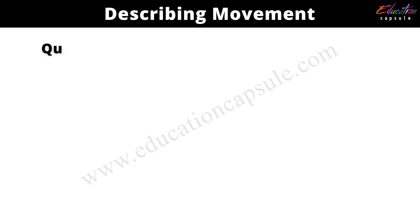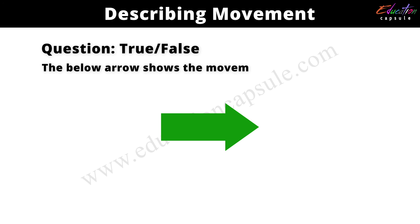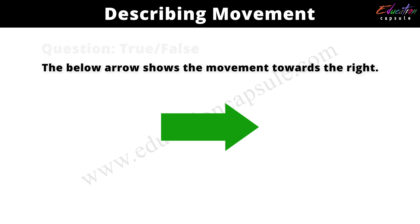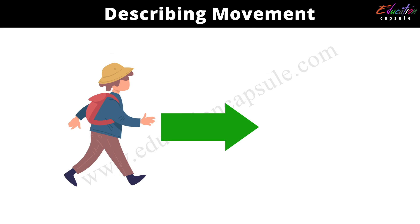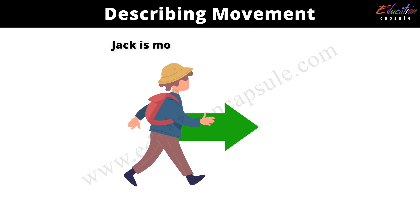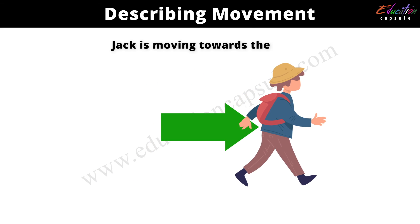Let us try a question. The arrow shown below indicates movement towards the right — is it true or false? Here, Jack is moving towards the right.